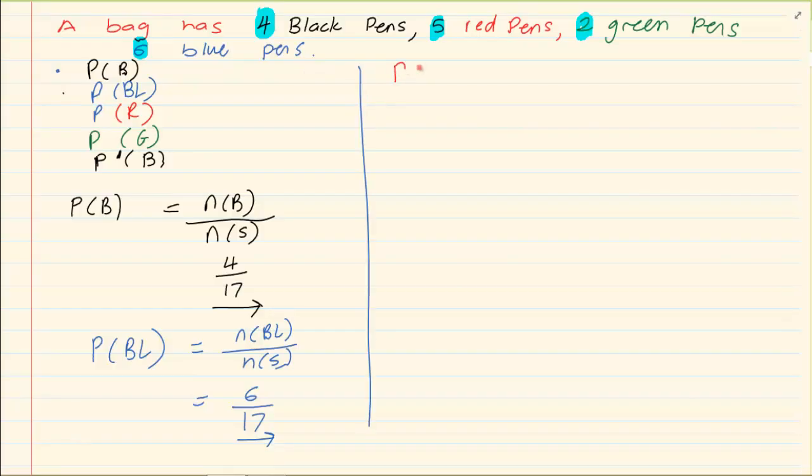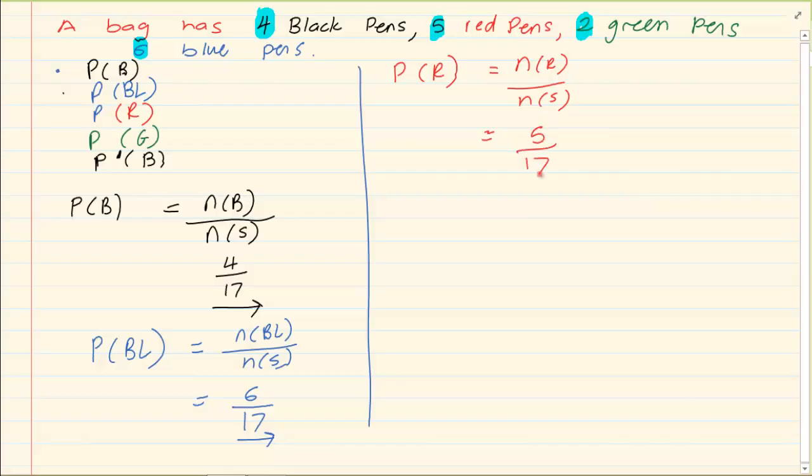Then what is the probability of the red? So we have n of the r over n of the total space. So how many red pens do we have? We have five. The total space, sample space is seventeen.